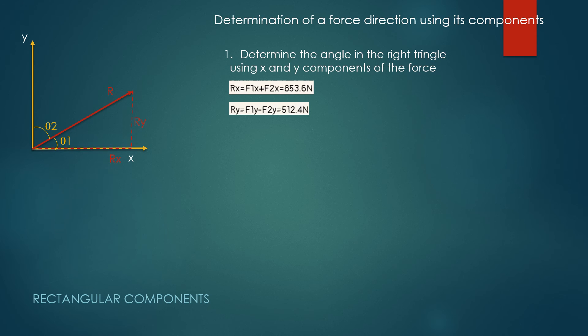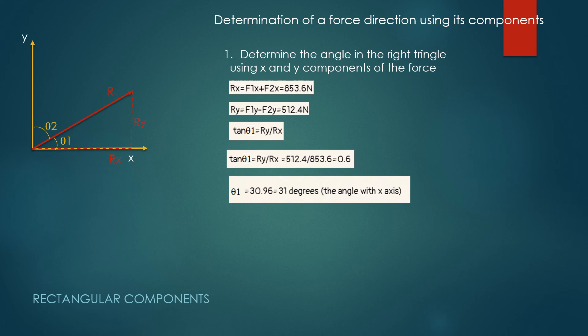If the angle of R with regard to the x-axis is theta 1, we can write tan(theta 1) equals Ry divided by Rx, which equals 0.6, giving an angle of 30 degrees for theta 1. From the picture, theta 2 is complementary to theta 1, so it equals 90 minus theta 1, which gives 59 degrees.